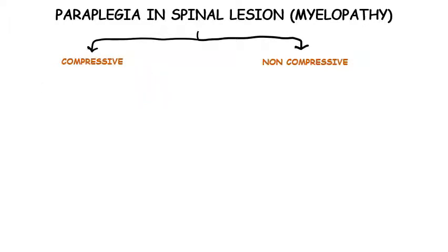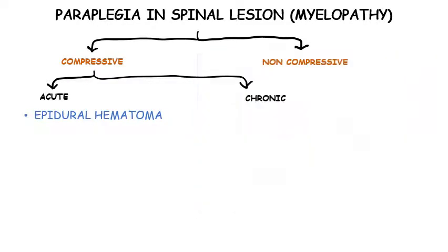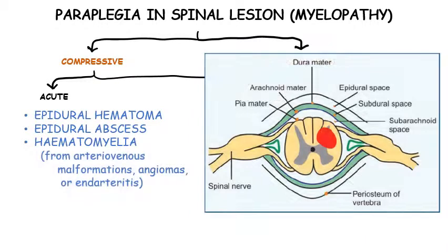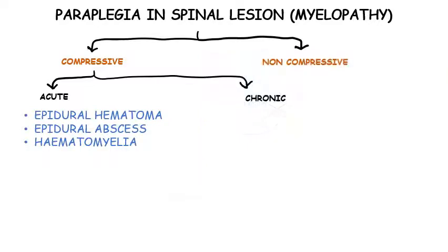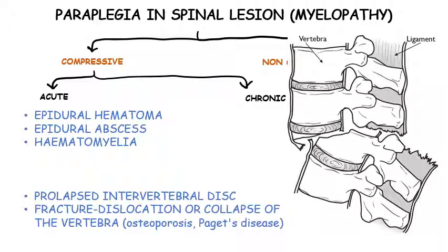Compressive myelopathy may be of acute onset or chronic onset. Causes of acute compressive myelopathy include bleeding in the epidural space, i.e., epidural hematoma; epidural abscess; hemorrhage within the spinal cord, i.e., hematomyelia from arteriovenous malformations, angiomas, or endarteritis; intervertebral disc prolapse; and even collapse or fracture of a vertebral body arising from, for example, osteoporosis.